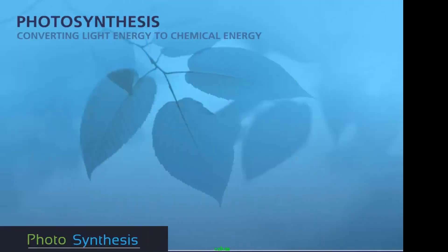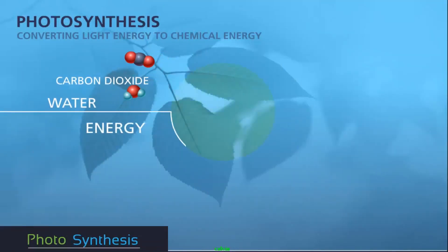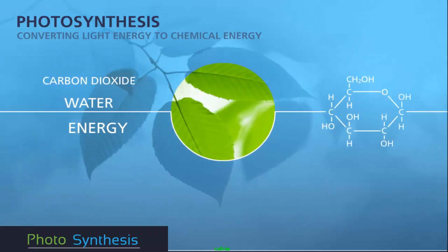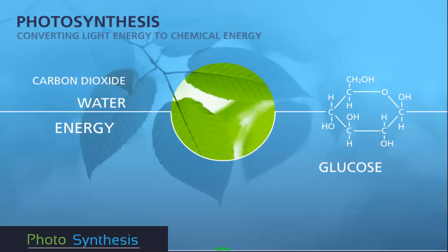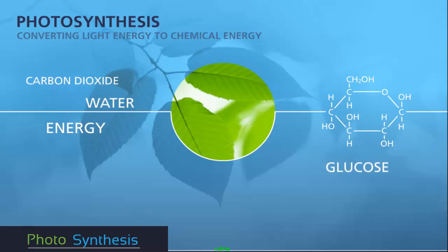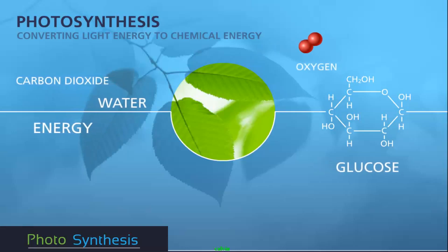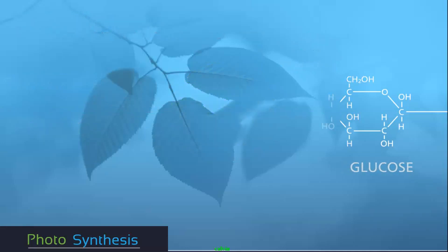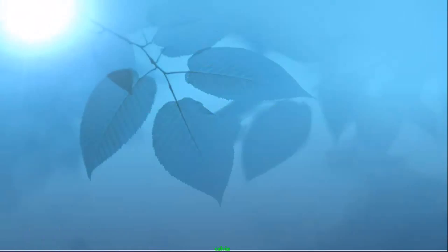In order for plants to grow, they need inputs of carbon dioxide, water, and energy. The chemical process by which plants use these resources to manufacture glucose — the building blocks of plants — is called photosynthesis. In the process, oxygen gas is produced as a byproduct. The energy for photosynthesis originates in the sun and arrives at the earth as sunlight.